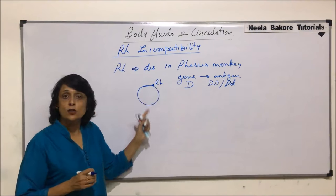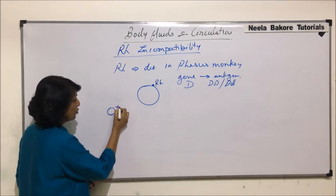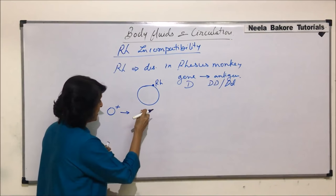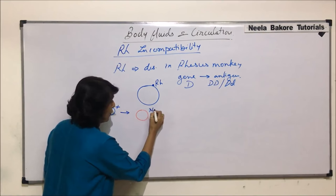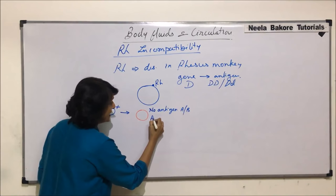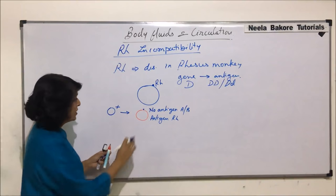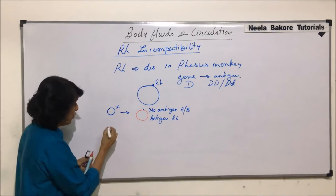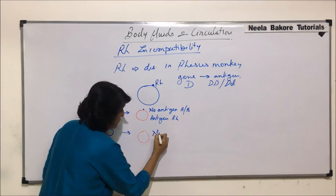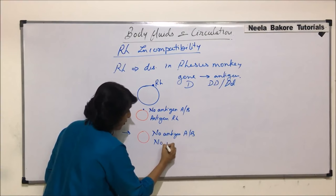If a person has this antigen on their RBC, we will call it positive. That means, if somebody has blood group O positive, it indicates that on the RBC there is no antigen A or B, but there is the RH antigen. O negative would mean that the RBC is without any antigen — no antigen A and B and no RH.